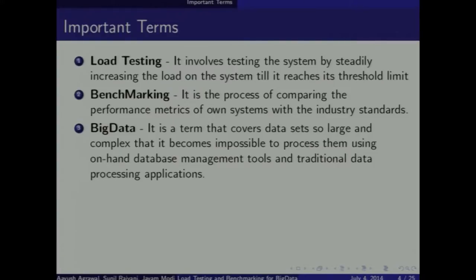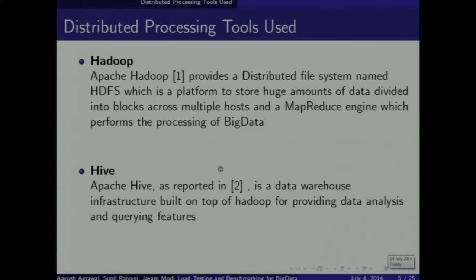Big Data covers datasets so large that they cannot be processed by traditional processing tools. The tools we used include Hadoop, which is used to maintain the HDFS — the distributed file system — and to load huge amounts of data. It also provides a MapReduce engine used to perform data processing.